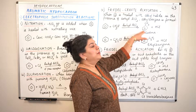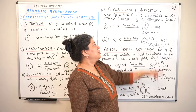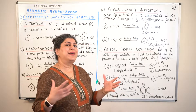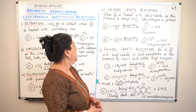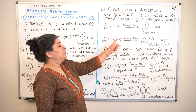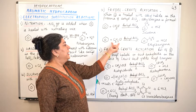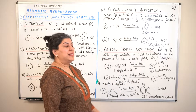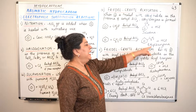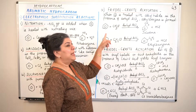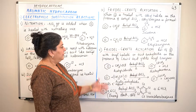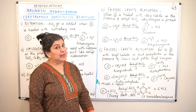Toluene, where benzene has a CH3 group, is also accepted in IUPAC nomenclature. Similarly, benzene reacts with C2H5Cl (ethyl chloride) in the presence of anhydrous AlCl3; the ethyl group adds to the benzene ring giving ethylbenzene, and the displaced hydrogen combines with chlorine to give hydrogen chloride.